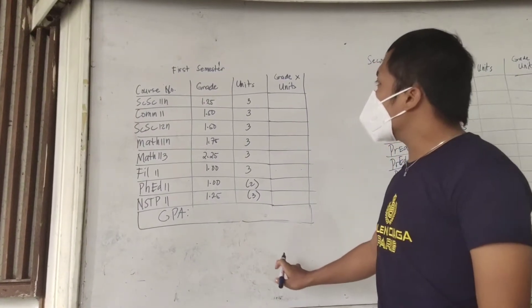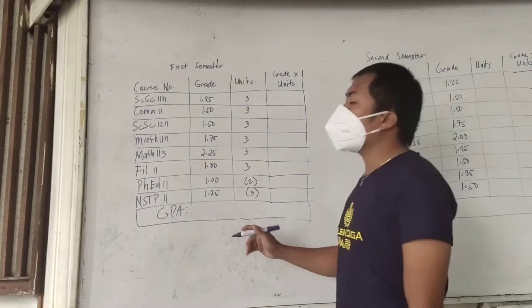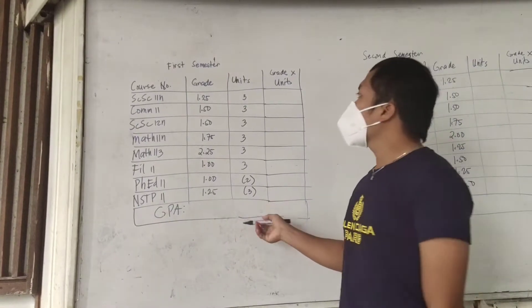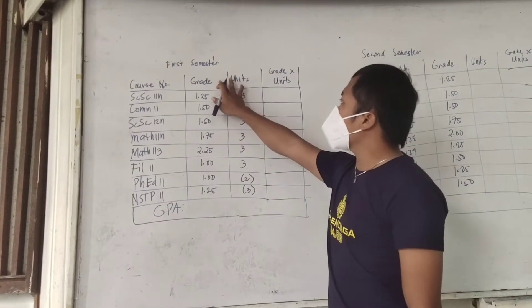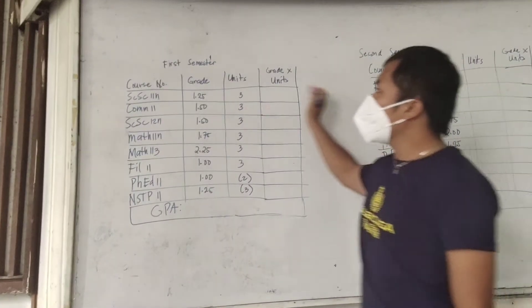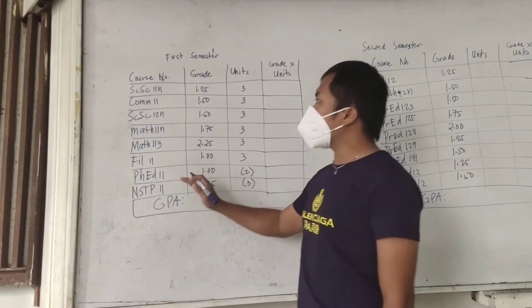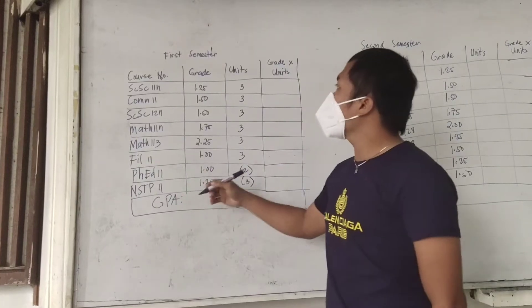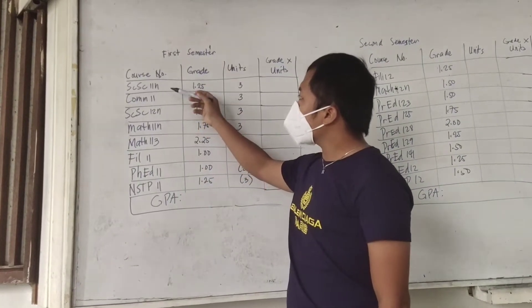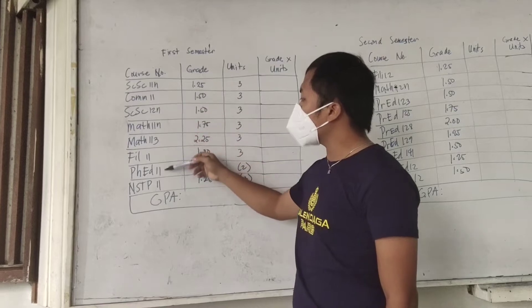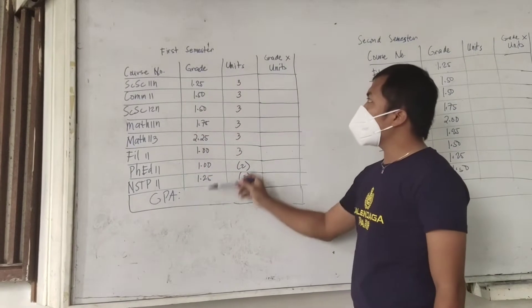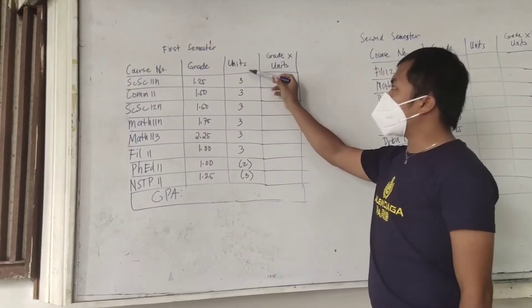On the board, you can see a sample copy of a student's grades for the first semester and later on for the second semester. This student appears to be an education student. For the first semester, the student has 8 courses or subjects with a corresponding grade and corresponding units.